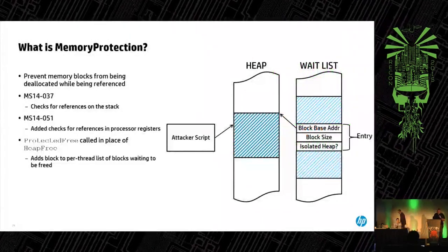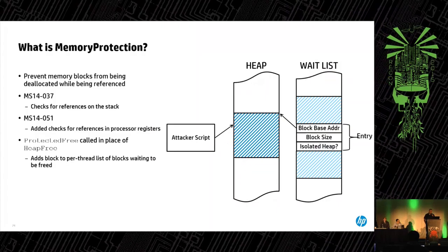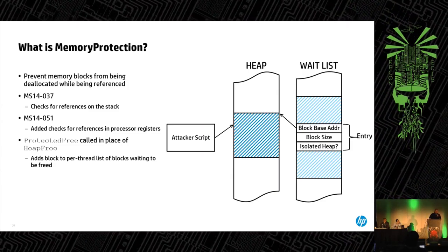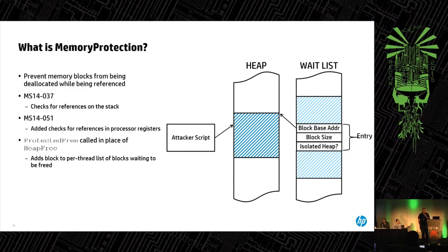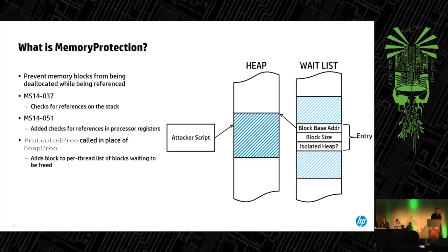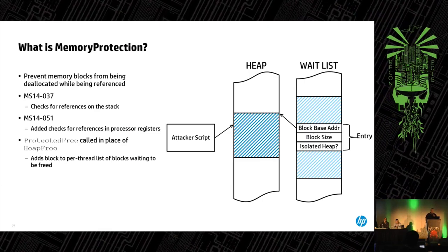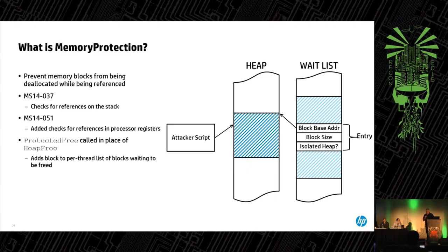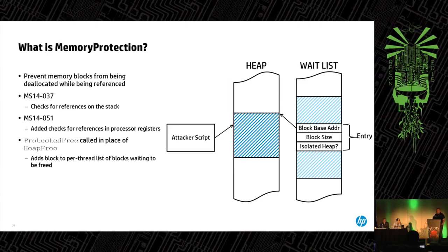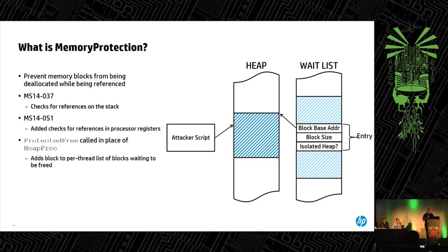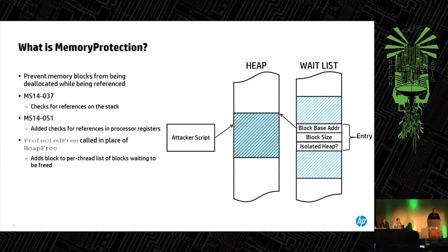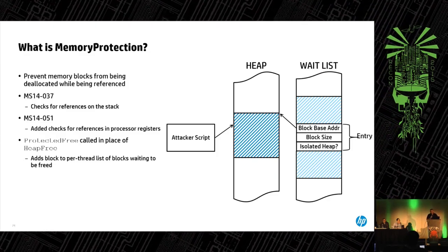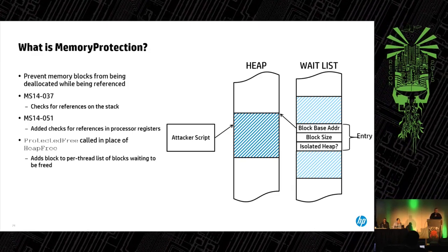Memory protection was introduced in July 2014, with improvements in the following month's patch. At the Zero Day Initiative, we noticed that unpurchased cases were turning into null pointer dereferences after the July patch — memory protection was interfering with use-after-frees. Memory protection is a delayed freeing mechanism inside Internet Explorer. Its purpose is to prevent blocks from being deallocated when they're referenced on the stack or in processor registers. It keeps blocks in a zeroed-out state, adds them to a waitlist, and a reclamation process periodically frees them at the heap manager level.